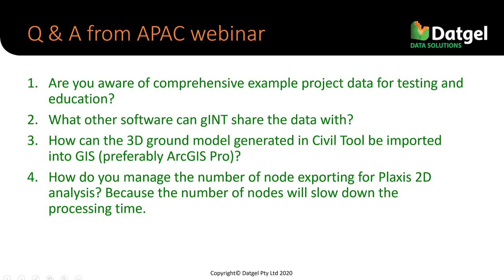Liang Pin asked how to manage the number of nodes exported to Plaxis for analysis, since a high number of nodes will slow down processing time. The Plaxis export out of Gint doesn't give you very much control — I think you can control which boreholes are included, but not much more than that. You've got to have all the layers, and every borehole needs to have each layer defined. There's not a lot of options to control this — I may need to test that to give a better answer.